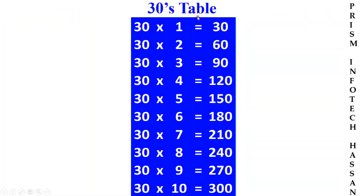30's table. 30, 1 times 30. 30, 2 times 60. 30, 3 times 90. 30, 4 times 120. 30, 5 times 150.